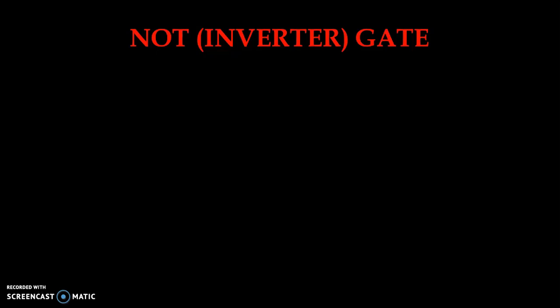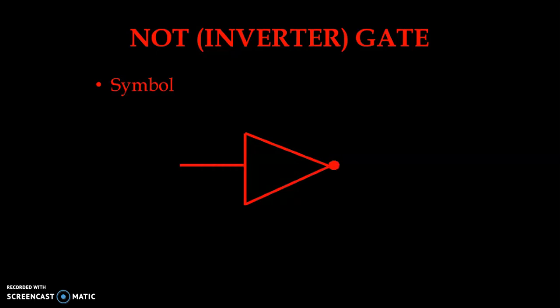Our next gate is known as the NOT gate, or inverter gate. Let us see how to draw the symbol. In the case of the NOT gate, you should know that it has only one input and one output — that is different from the other gates. In the AND gate and OR gate we observed a minimum of two inputs, but in the case of the inverter it has only one input. The input is indicated by A and the output by Y.